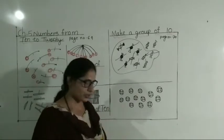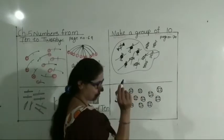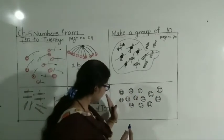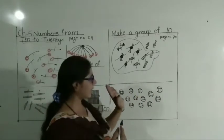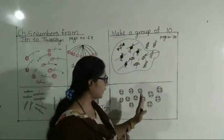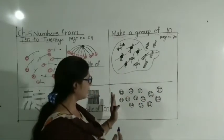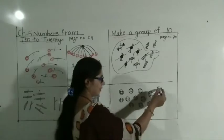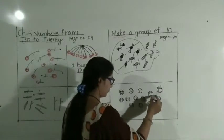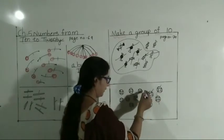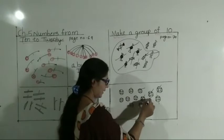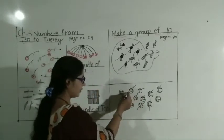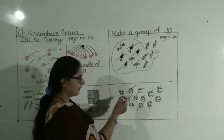Let's count. This side I am counting. This side also, any side you have to count. See here: one, two, three, four, five, six, seven, eight, nine, ten.